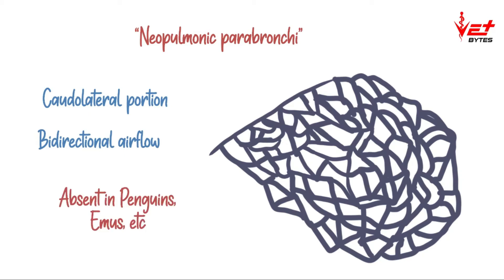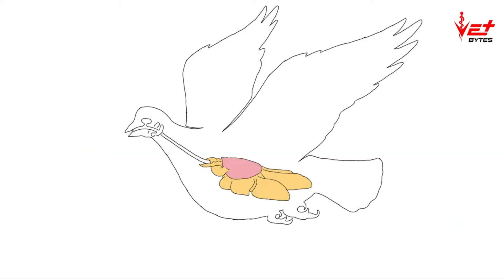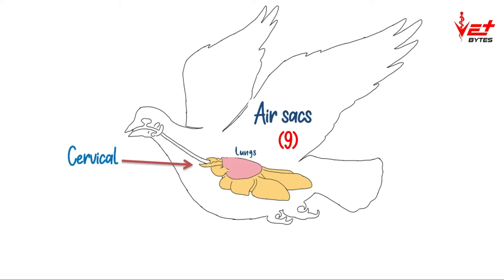The neopulmonic parabronchi is absent in penguins and emus, so penguins and emus have only paleopulmonic parabronchi. In birds the lungs are rigid and small and do not contribute much to ventilation, so ventilation is majorly contributed by the air sacs. There are nine air sacs in birds.